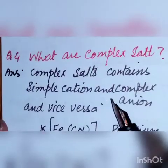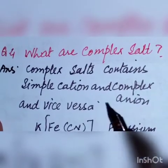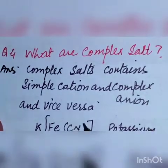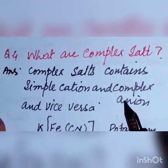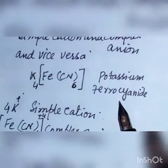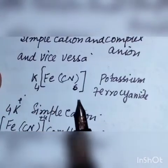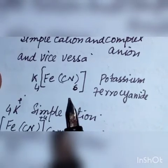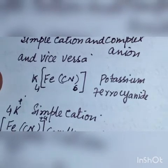Question number four: what are complex salts? Complex salts contain a simple cation and a complex anion, or vice versa. For example, potassium ferrocyanide, K₄Fe(CN)₆, has a simple cation — potassium — and a complex anion — ferrocyanide.